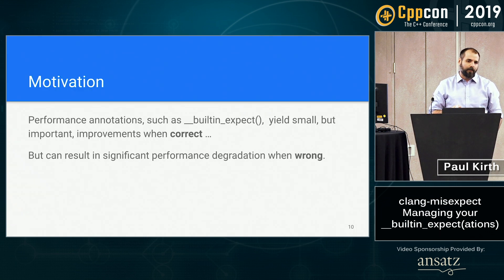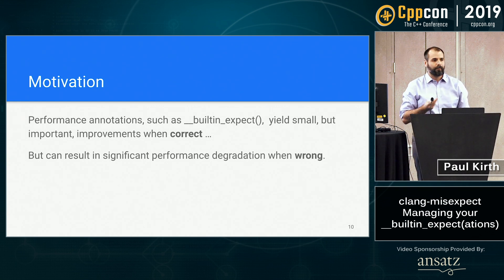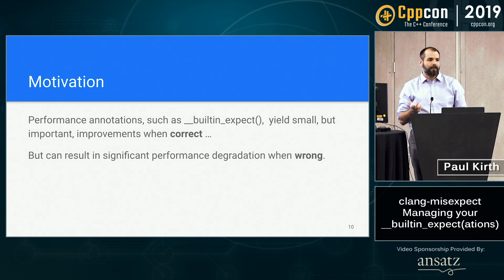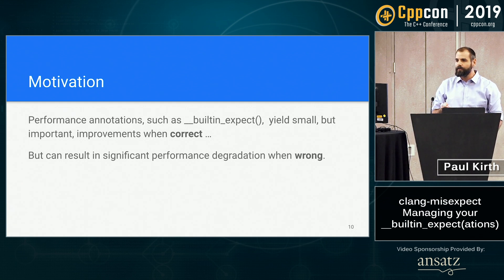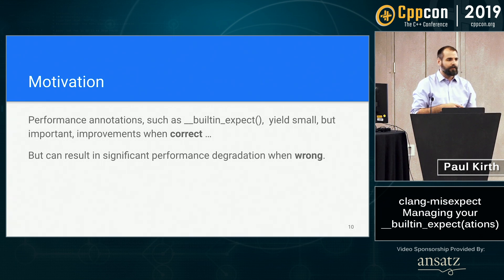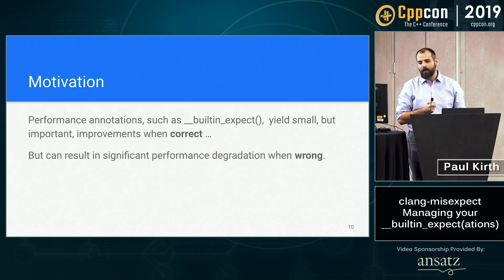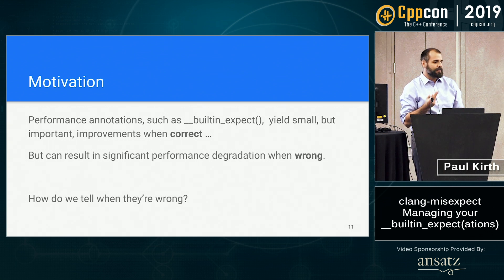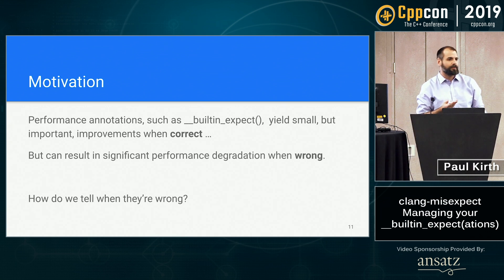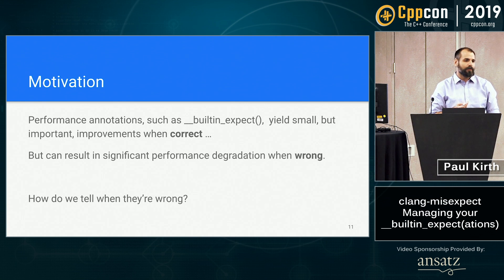And that's kind of where the problems start. Developers are notoriously bad at predicting the runtime behavior of their programs. When these annotations are right, they get really good — small but important performance improvements. But when they're wrong, they can often pessimize performance. And this is something we can't check statically, so we'd like to know when they're wrong. We need some kind of dynamic information.